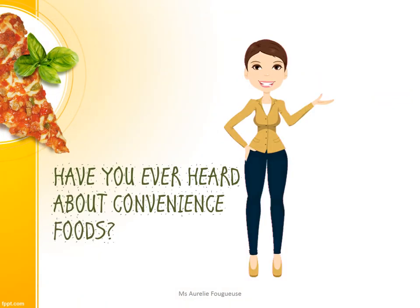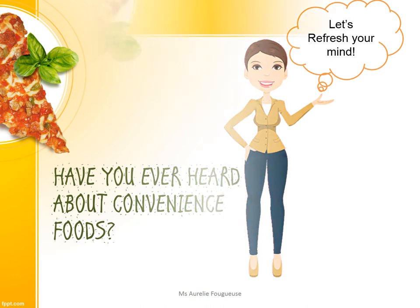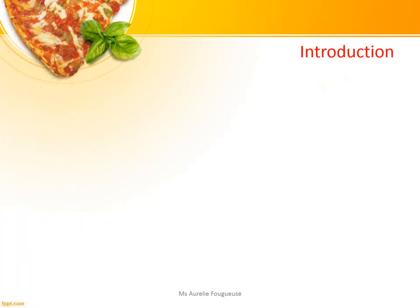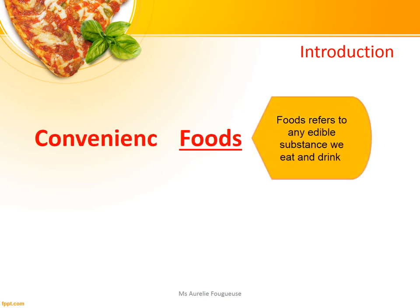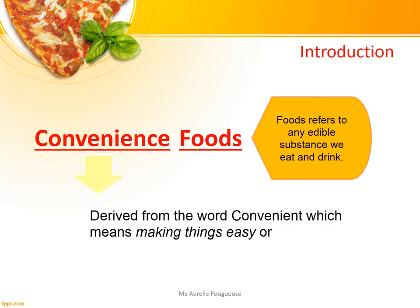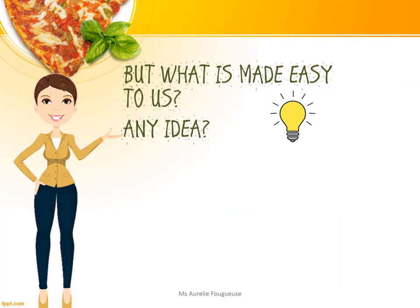Have you ever heard about Convenience Foods before? Let's refresh your mind. So what are Convenience Foods? We all know that food refers to edible substances that come from plants and animals, and they can be in a liquid or a solid state. In the term Convenience, there is the word Convenient. Convenient means doing things with ease, meaning without any difficulty. But what is made easy to us?